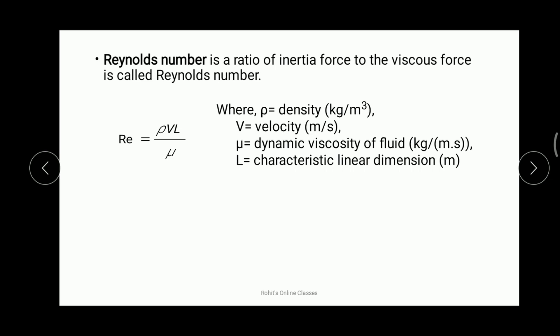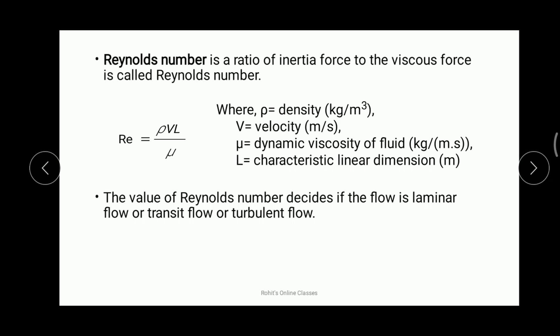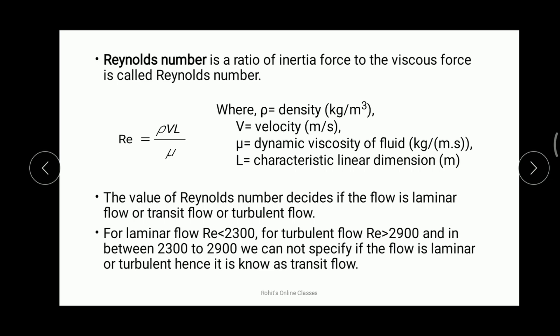The Reynolds number tells us whether the flow is laminar, turbulent, or transitional. For laminar flow, the Reynolds number is always less than 2300. For turbulent flow, it is greater than 2900. When the Reynolds number lies between 2300 and 2900, we cannot specify if the flow is laminar or turbulent — this is known as transitional flow.